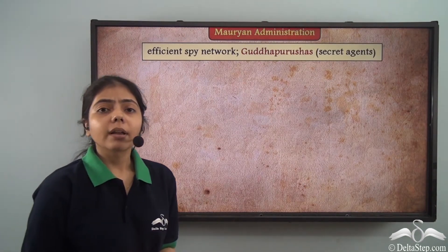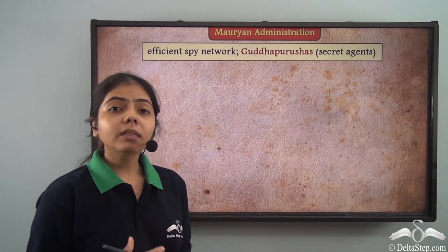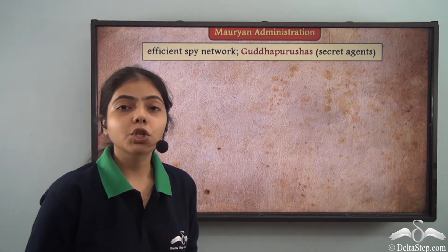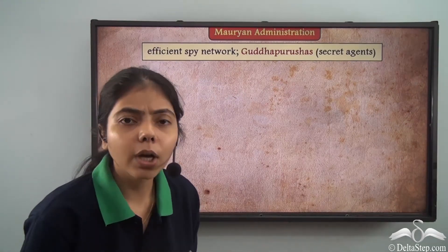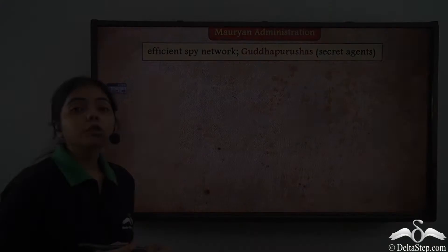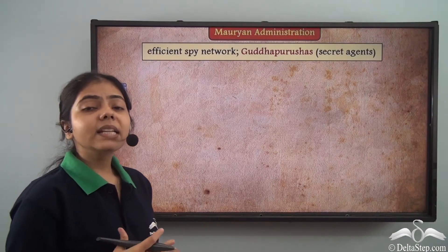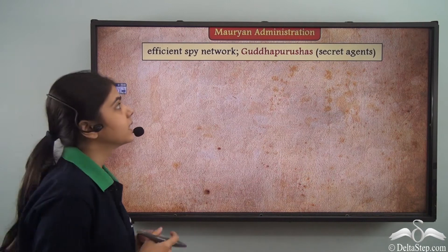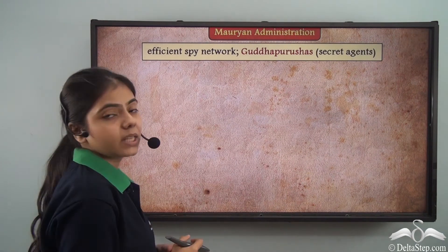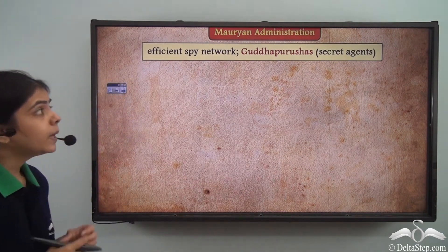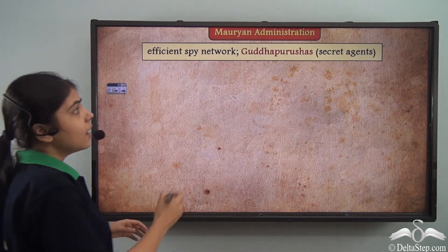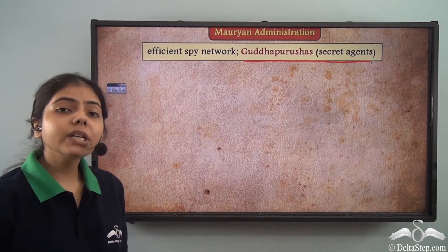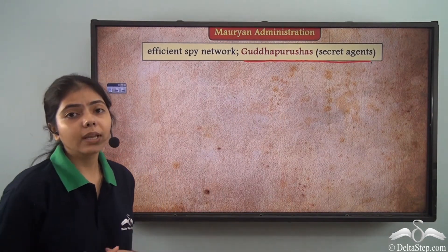To ensure that ministers within the governing body did not engage in mischief like corruption or bribery, a spy network was prevalent in the Mauryan administration. People known as Gadha Purushas or secret agents were appointed throughout the empire.